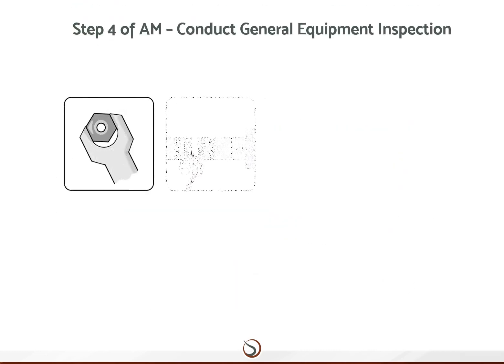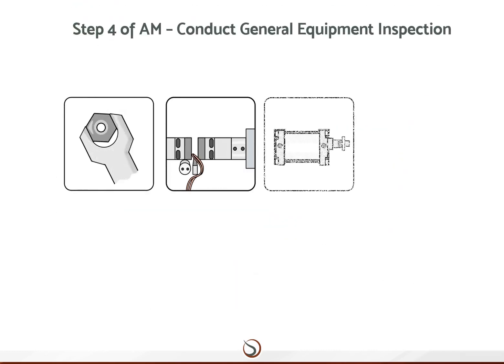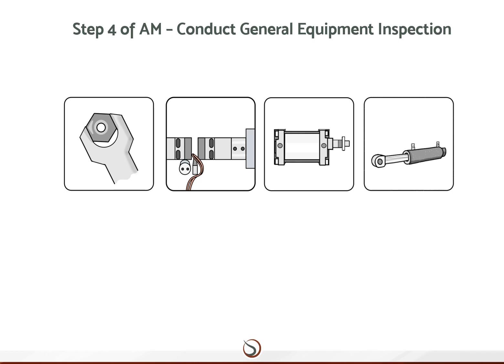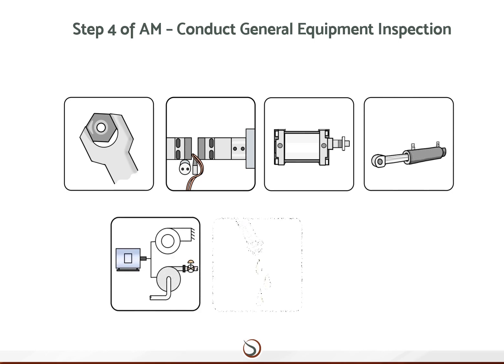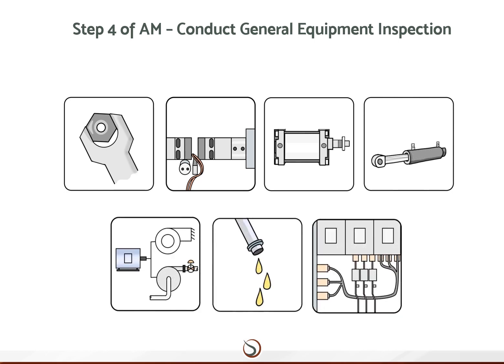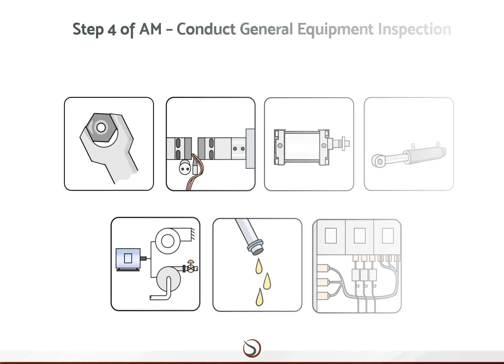Operators are trained in the detail of the functional parts and update the tentative standards created in step three. The functional parts are split into seven sub-elements: one, machine elements — fasteners, nuts, bolts, etc.; two, drive systems; three, pneumatics; four, hydraulics; five, fans and pumps; six, lubrication; seven, electrical systems, including sensors.